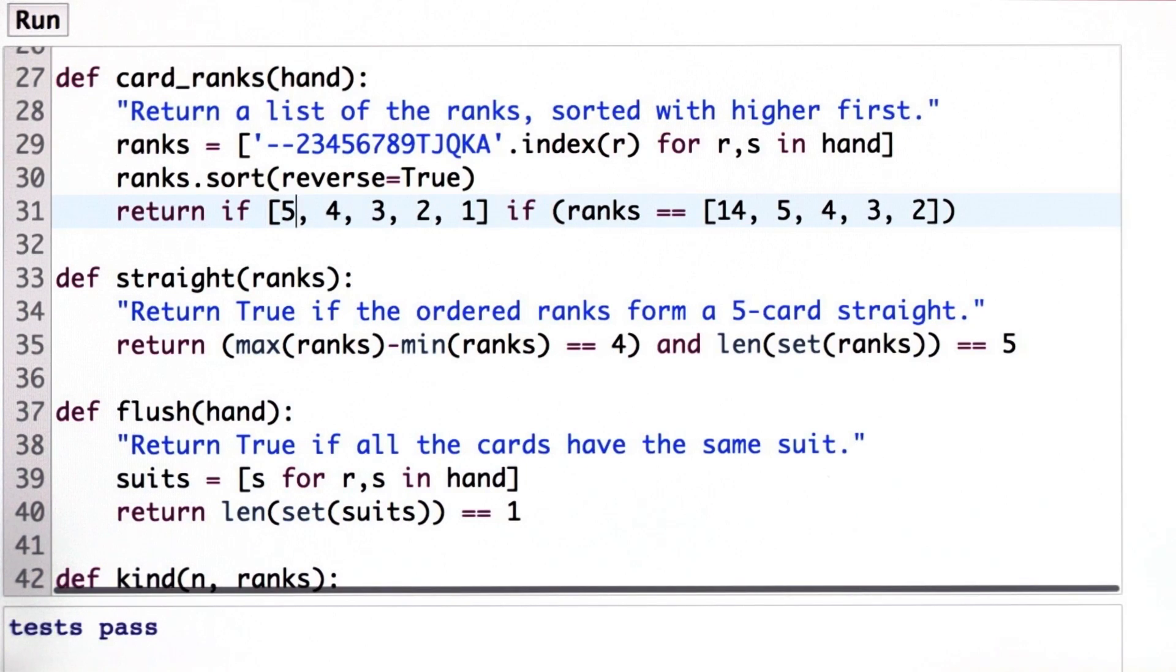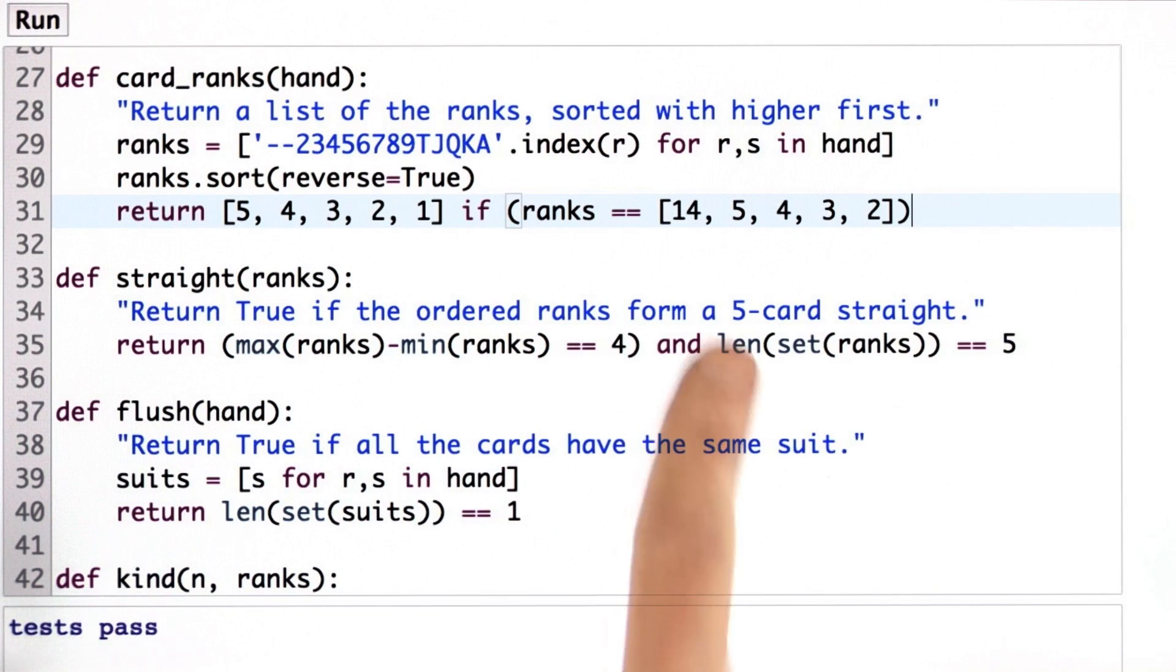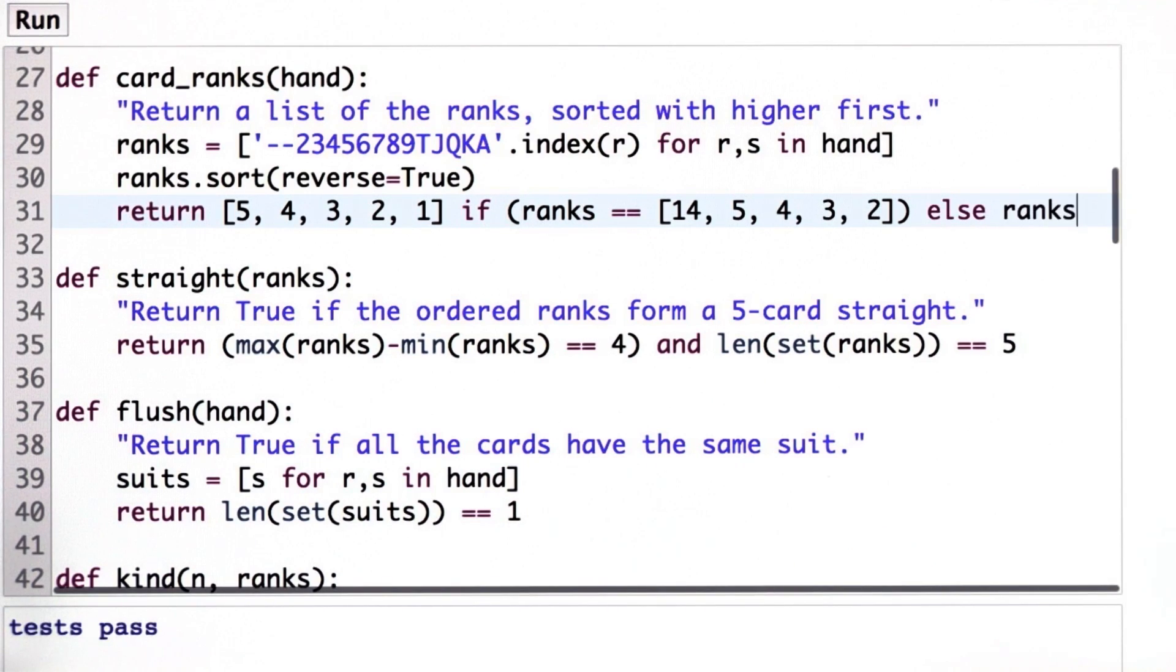And I've gotten the syntax backwards here when I did the insertion, so what I want to say is return 5, 4, 3, 2, 1, which would be the correct ordering for where we want to put an ace if we had ace, 2, 3, 4, 5 as our hand. And for any other hand, just return the ranks as is.